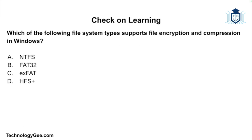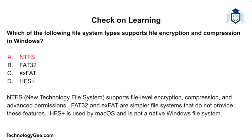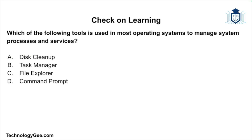Now let's get into some check on learning. Which of the following file system types supports file encryption and compression in Windows: NTFS, FAT32, exFAT, or HFS+? The correct answer is NTFS (New Technology File System), which supports file-level encryption, compression, and advanced permissions. FAT32 and exFAT are simpler file systems that do not provide these features, and HFS+ is used by Mac and is not native to Windows.